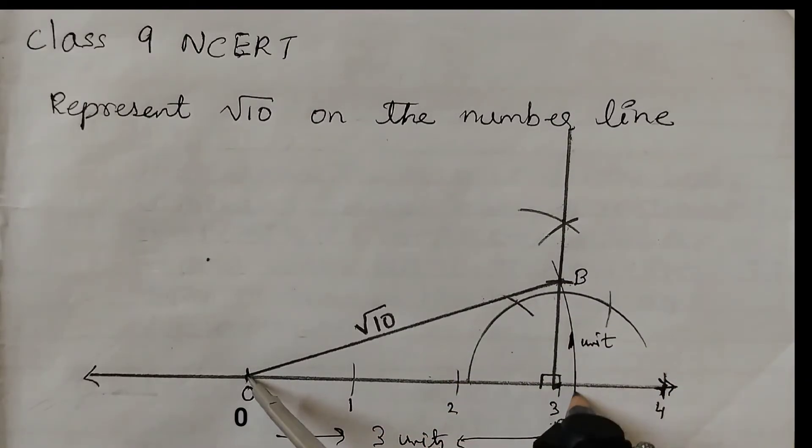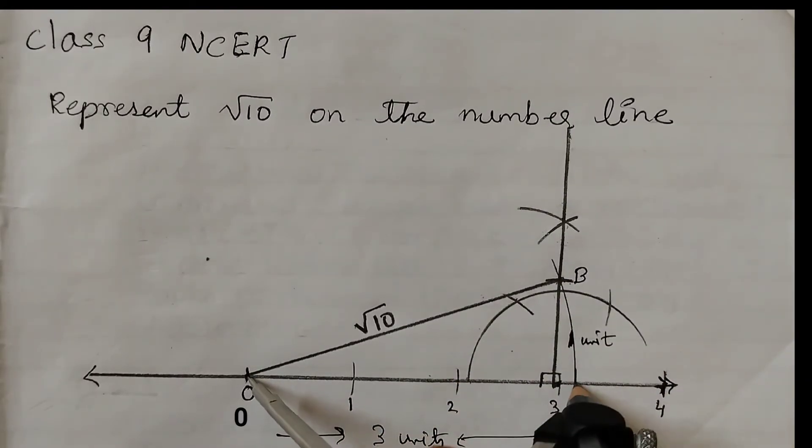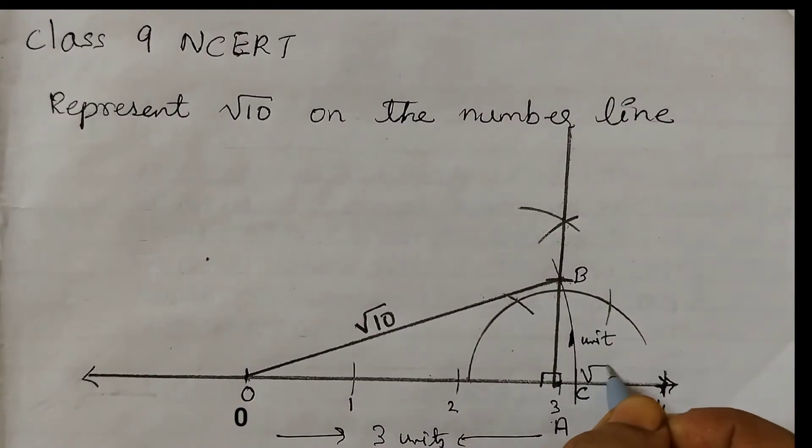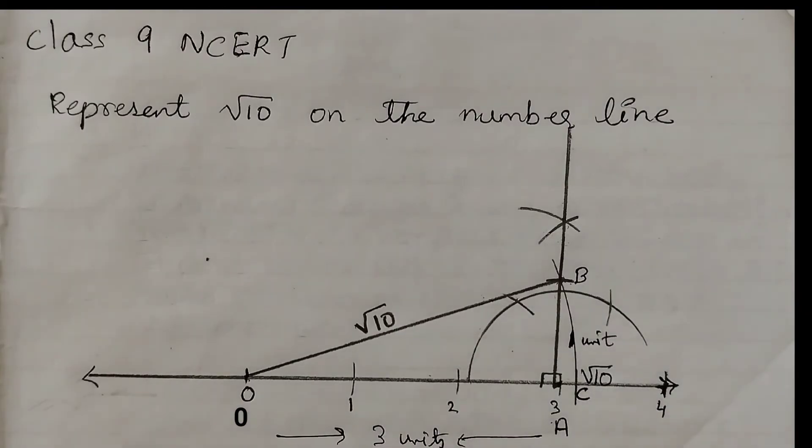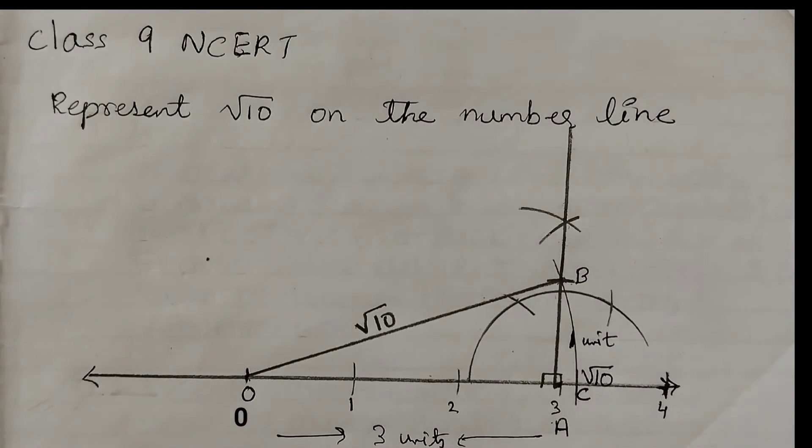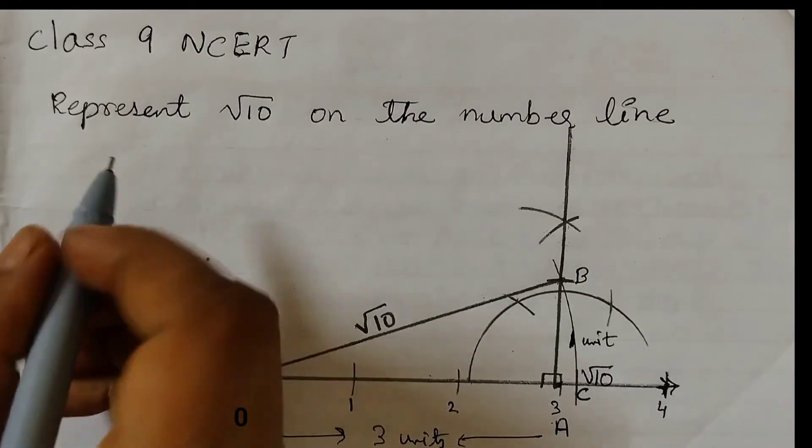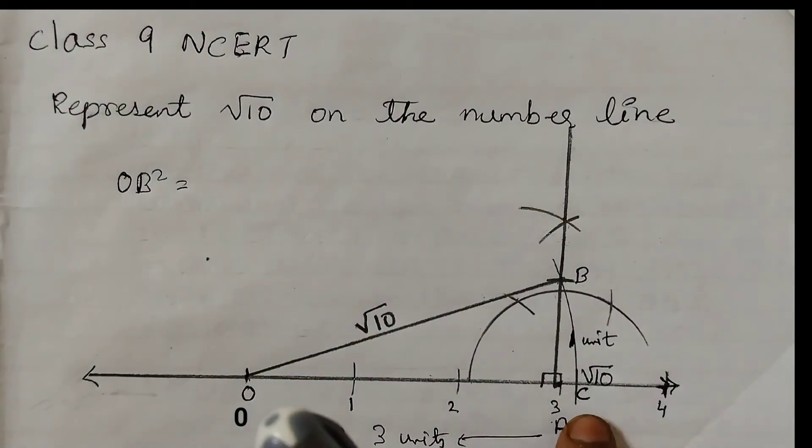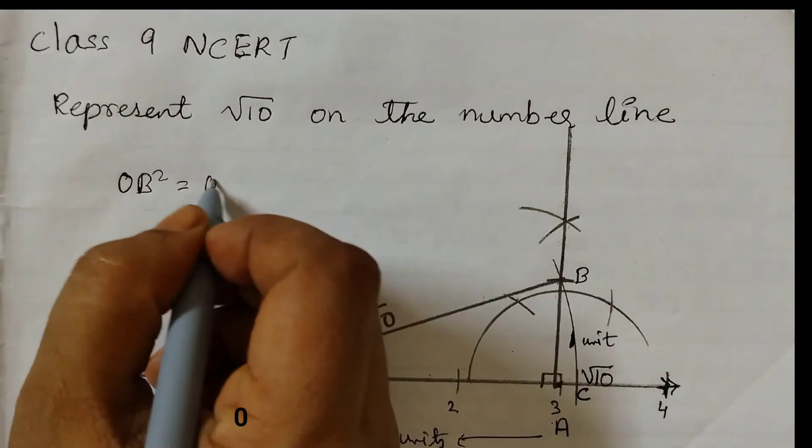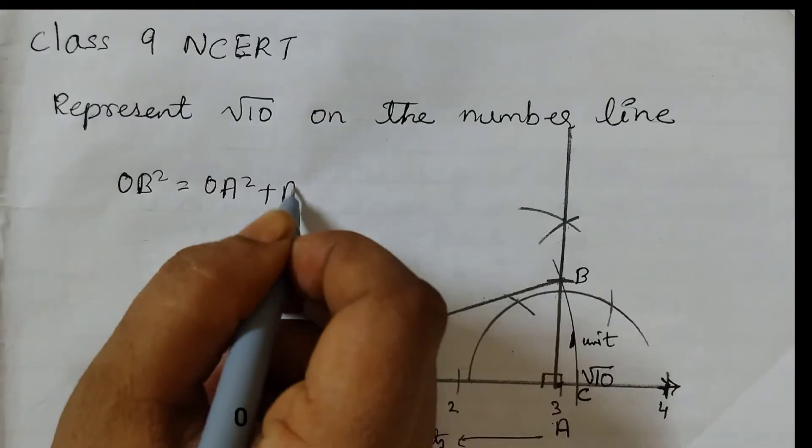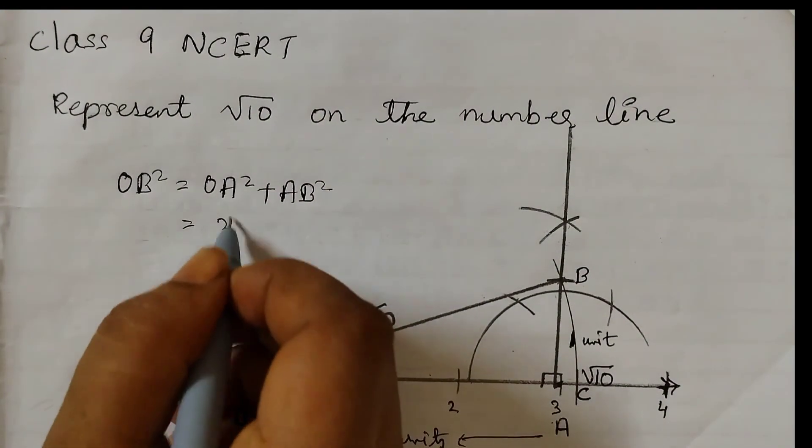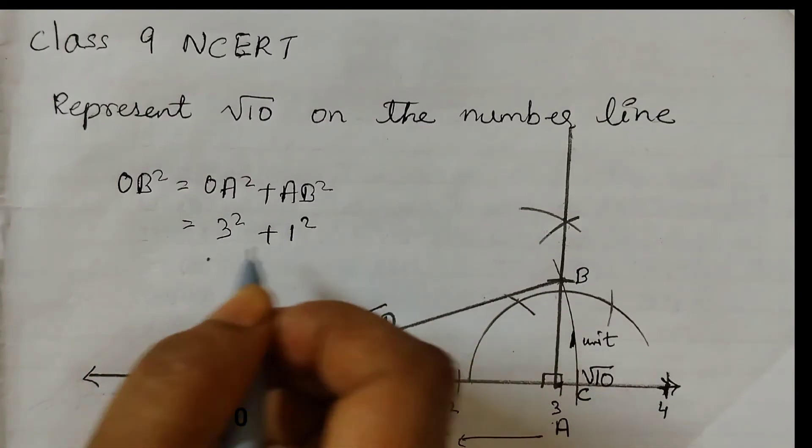This point here is C and this represents square root of 10. Now we shall prove this using Pythagoras theorem. OB squared is equal to OA squared plus AB squared. OA is 3 units, so 3 squared plus 1 squared.